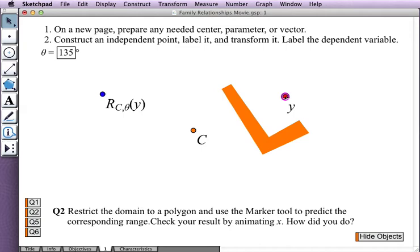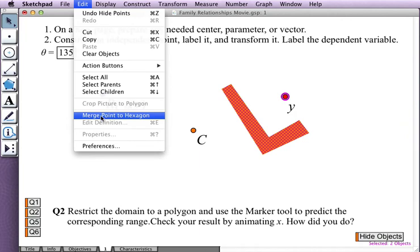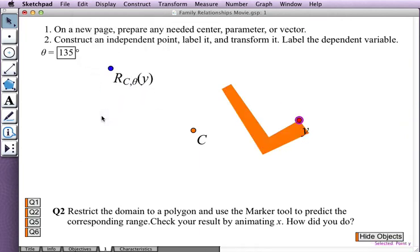So now I can restrict the independent variable to this polygon. From the Edit menu, I choose Merge Point to Hexagon. And I need to use the Marker tool to predict the corresponding range. So I know I'm starting from here. I think it's going to go, let's see, down and to the right, 135 degrees around from there. I think it's going to start out going up.